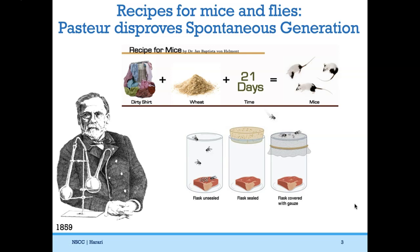His goal was to disprove spontaneous generation — the idea that flies came from meat spontaneously. Pause here and write down what the control is, whether this is a good experiment, and what the experimental results indicate about spontaneous generation. In the unsealed flask, flies did come. But when the flask was sealed, no flies generated. With gauze on top, flies were attracted to the meat and laid eggs on top of the gauze — proof that flies are attracted to the smell of meat and lay their eggs there. This disproved the idea that living things can come from non-living things.